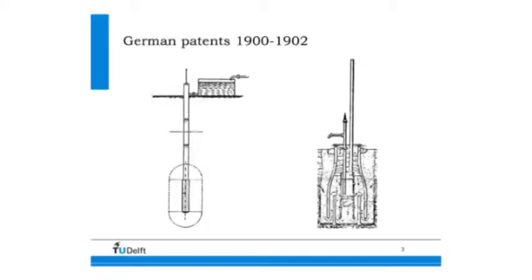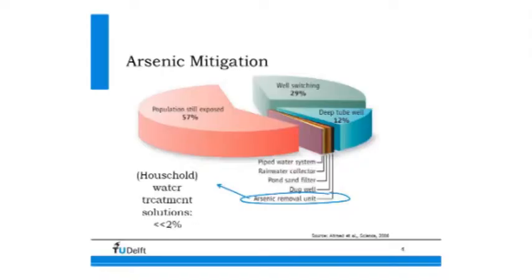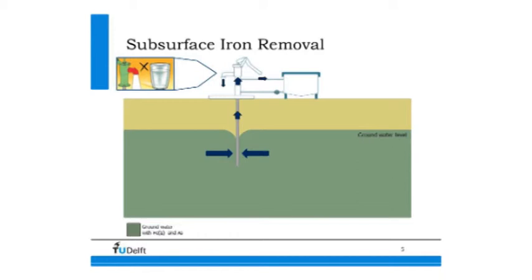First, a brief introduction to this technology. Subsurface iron removal has been around for a long time — the first full-scale plant was built somewhere in Scandinavia, and in the beginning of the 1900s there were two patents in Germany. It's a really old idea: using oxic water in an anoxic aquifer to remove iron in situ, in the subsurface, without any treatment afterwards. We are looking at this technology to mitigate arsenic problems and are focusing on Bangladesh, examining its decentralized use at a hand pump level.